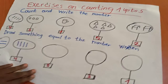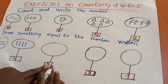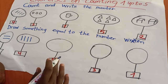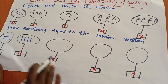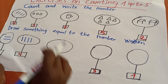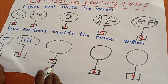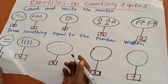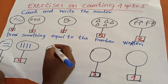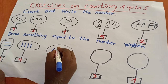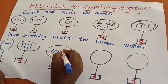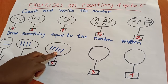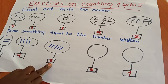Here I have number five. I'm going to draw something equal to number five. I choose oblique lines. One, two, three, four, five. These oblique lines are equal to number five.